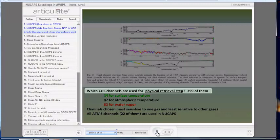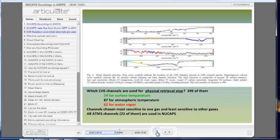Then the physical retrievals are done sequentially. The physical retrieval is done using a subset of 399 of more than 1,300 CRIS channels as shown on this chart. In the physical retrieval, the algorithm sequentially solves for temperature, moisture, ozone, and other trace gases.